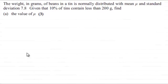Hi. Now in this question, we're given that the weight in grams of beans in a tin is normally distributed with mean mu and standard deviation 7.8. Given that 10% of the tins contain less than 200 grams, find the value of mu for three marks. So if you'd like to have a go at this, haven't done so already, just give you a moment then to pause the video.